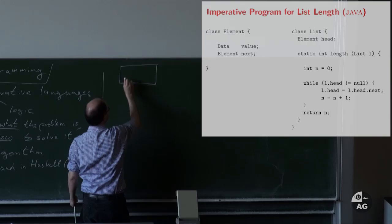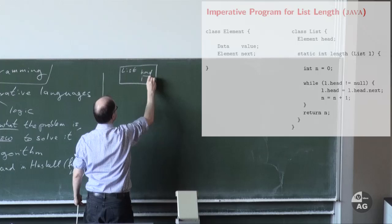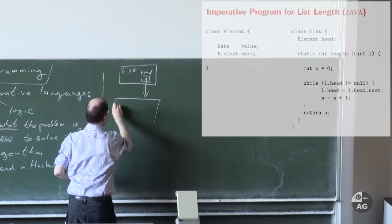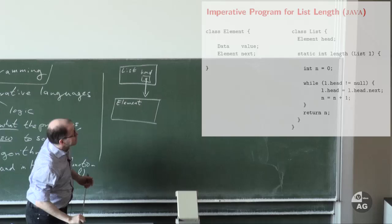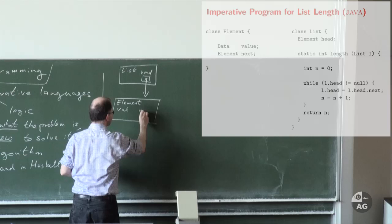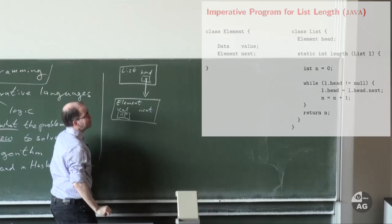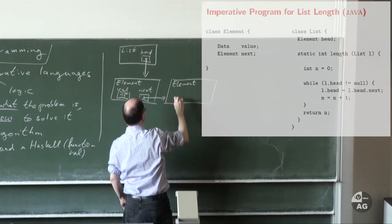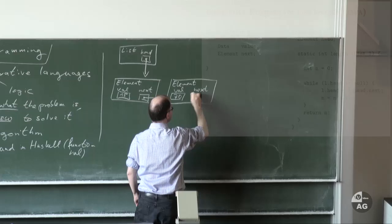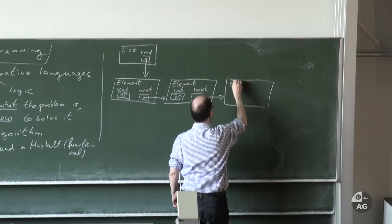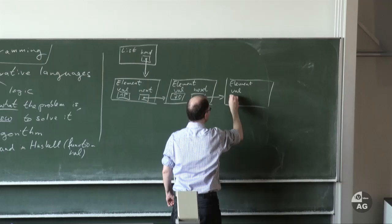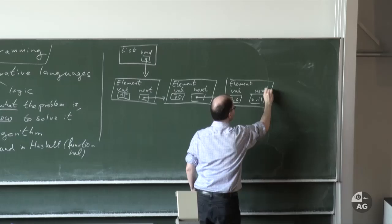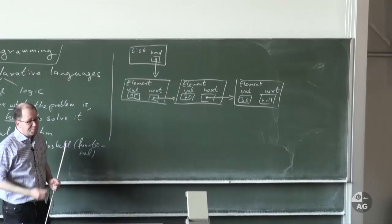We have a pointer to the first element of the list — an object of type element. These elements have two fields: a value field and a next field. For example, here we could have the number 15, and next would be a pointer to the next list element — say 70 — and another last list element with value 36. At the end of the list, in the next field we have null, the pointer to nothing. So this would be the realization of the list with the numbers 15, 70, and 36.